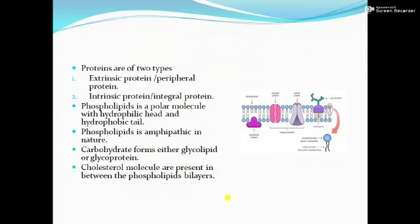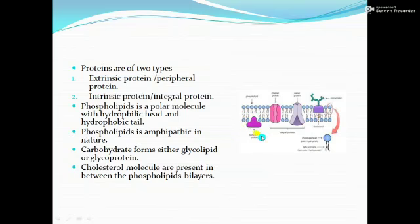Apart from that, if we talk about the protein, proteins are made up of amino acids. There are two types of proteins: the first is extrinsic or peripheral protein, and the second is intrinsic protein or integral protein. Extrinsic protein is present on the surface — it is also called peripheral protein or extrinsic protein.